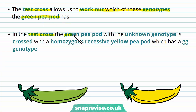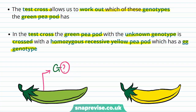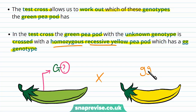In the test cross, the green pea pod with the unknown genotype is theoretically crossed with a homozygous recessive yellow pea pod, which has a little g, little g genotype. So here we have our green pea pod — which we know has a large G — but we don't know what the second allele is. We then mate it with the homozygous recessive yellow pea pod, which we know is little g, little g.